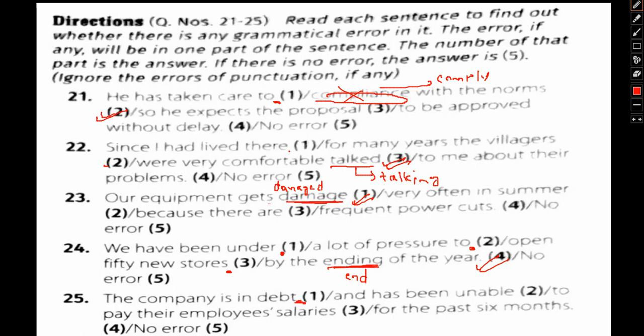Let's take a look. The company is in debt—there's no error, this is all okay. And has been unable, again no error. To pay their employees' salaries—the company is a singular thing, so it won't be their, it cannot use plural form. It will simply be its employees' salary. So 3 is where we see the error.